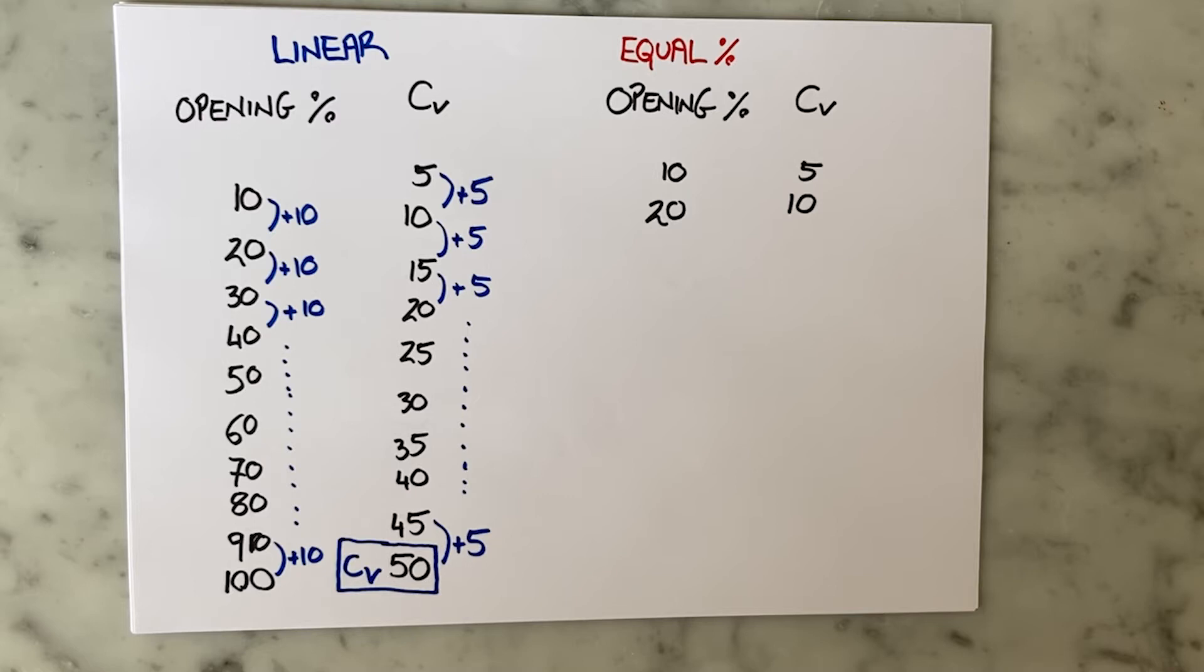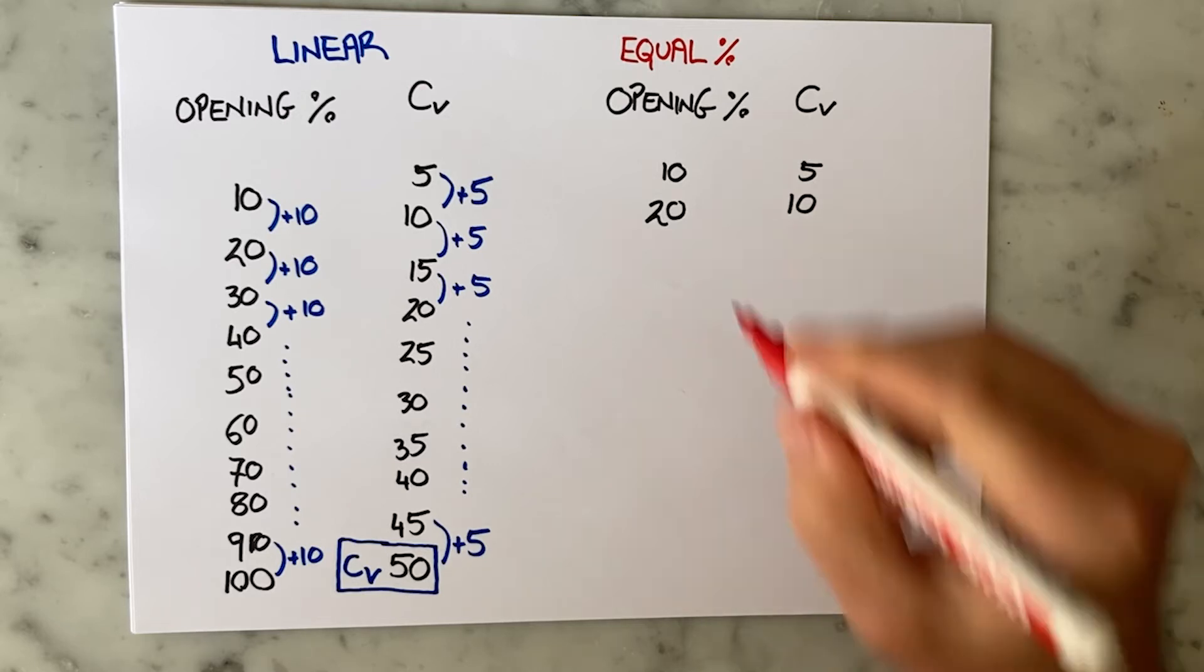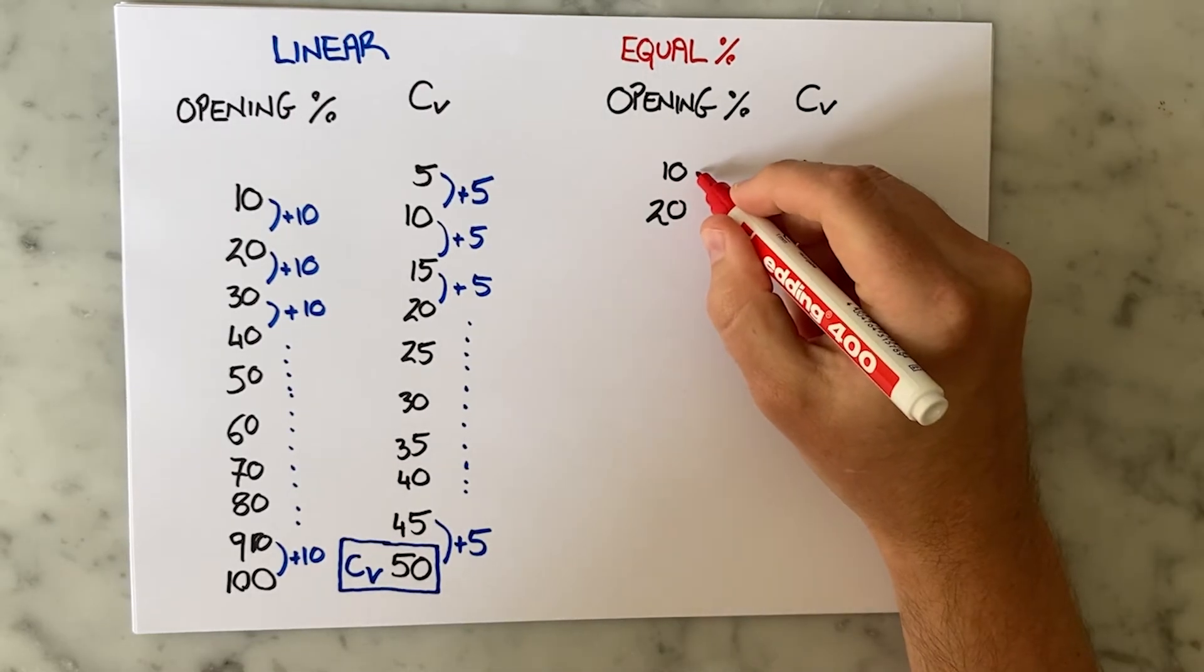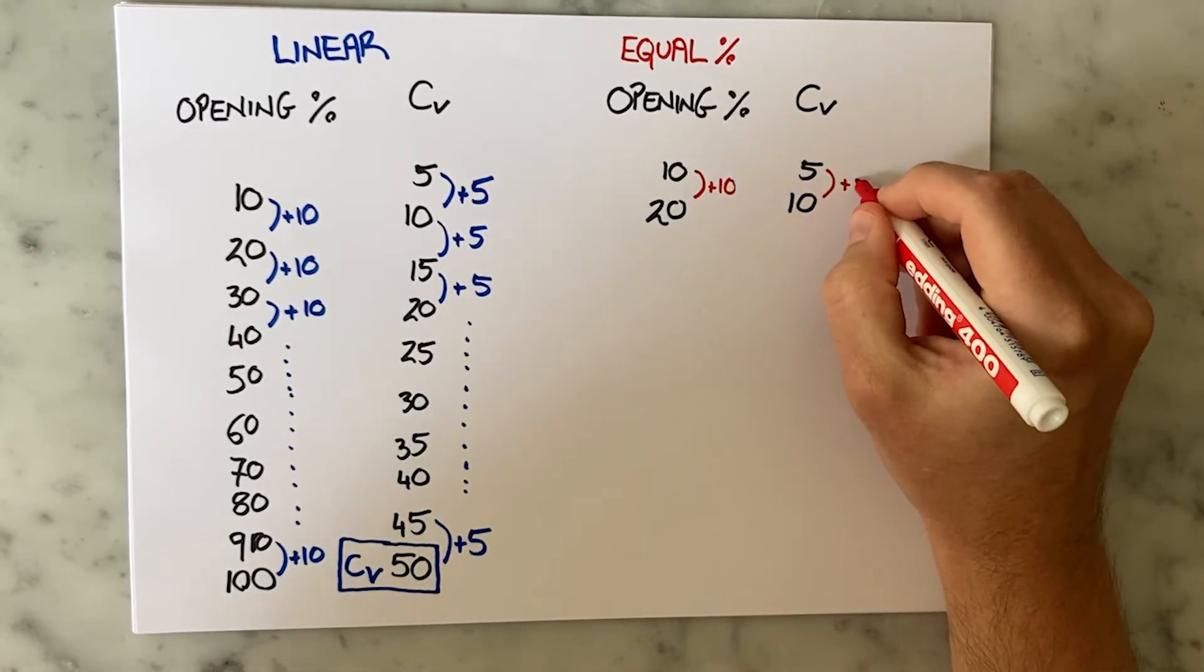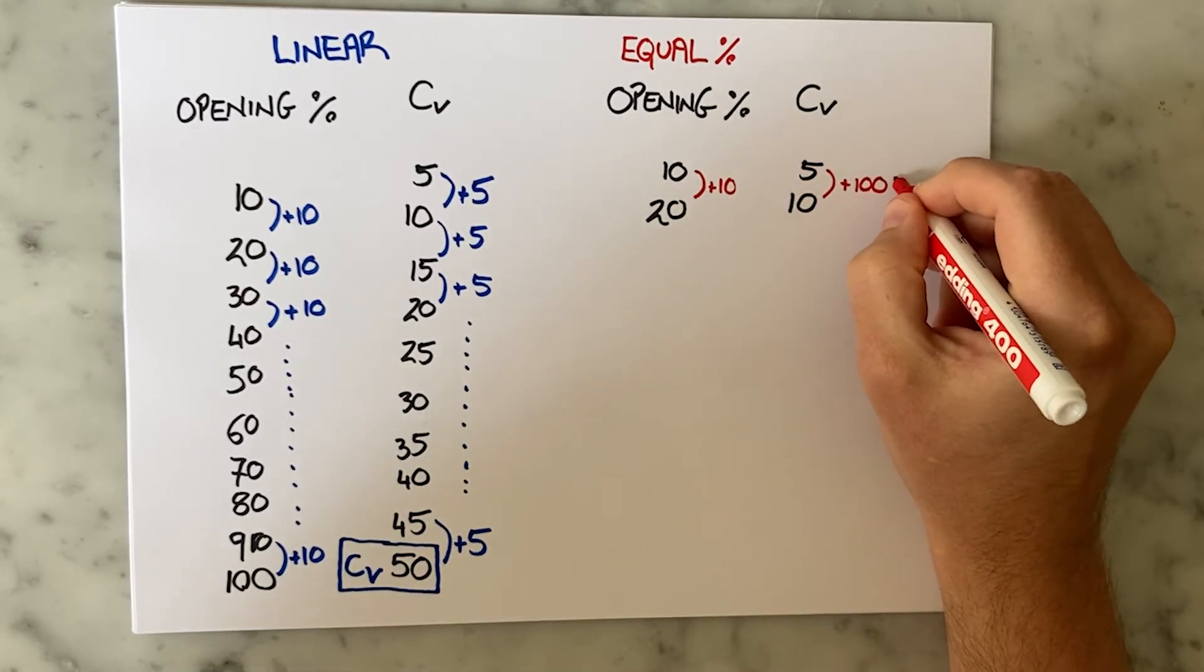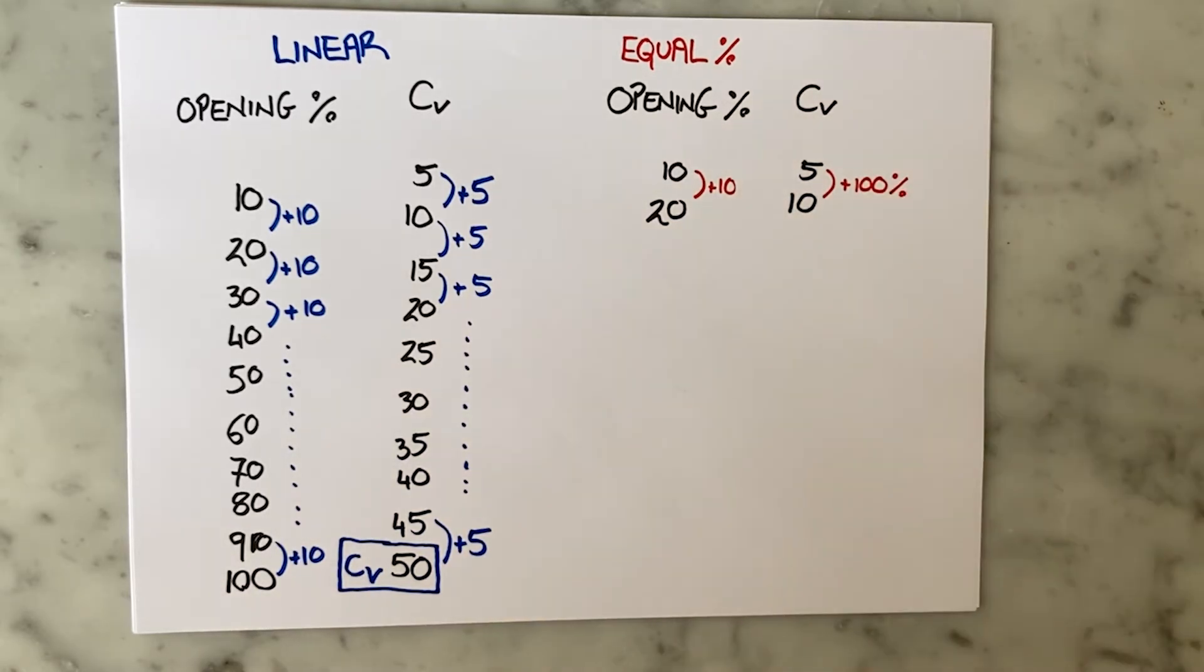Now let's look at the equal percentage valve. By definition, equal percentage means that I add the same percentage of flow for every step change in valve opening. So when I open from 10% to 20% my CV increases from 5 to 10, which means that my CV has doubled.